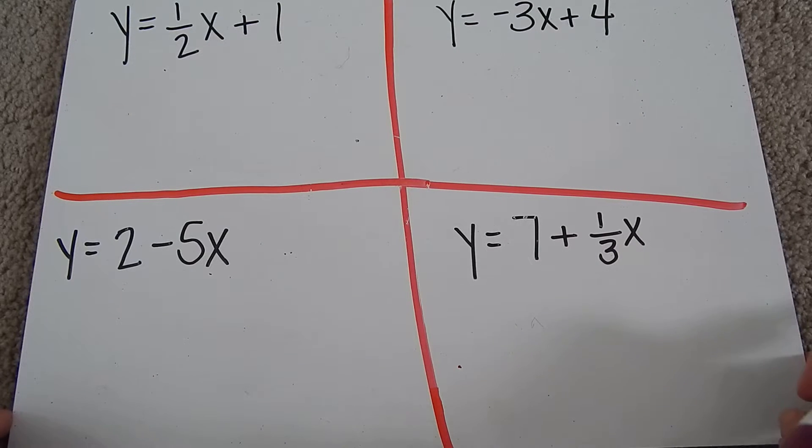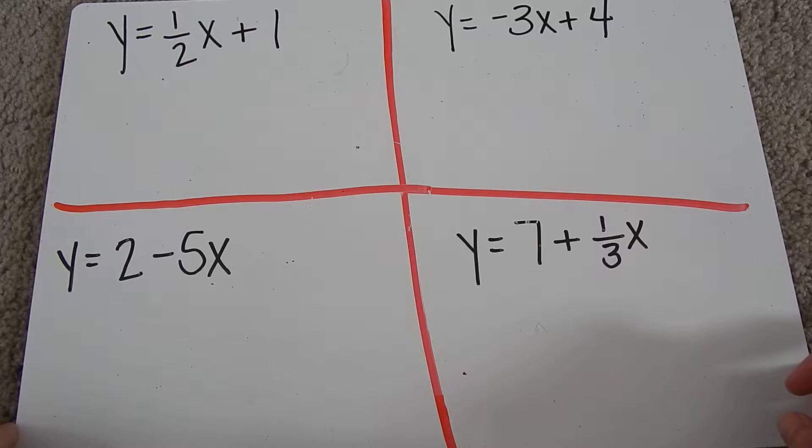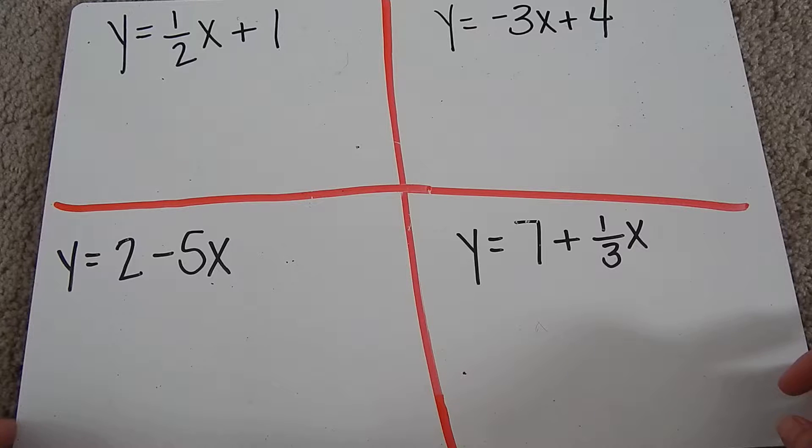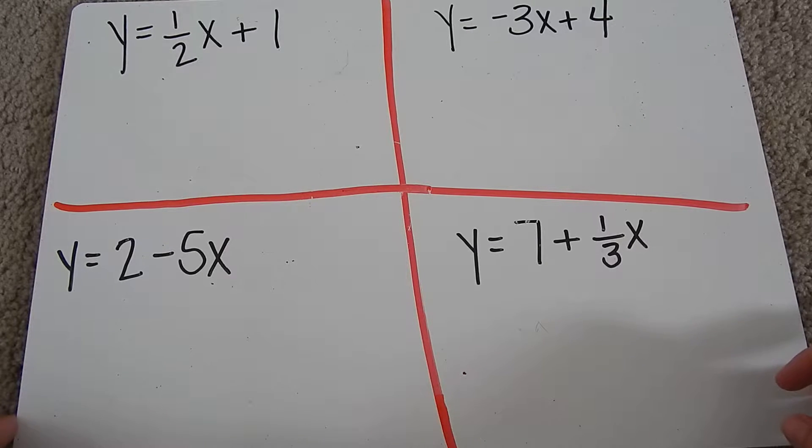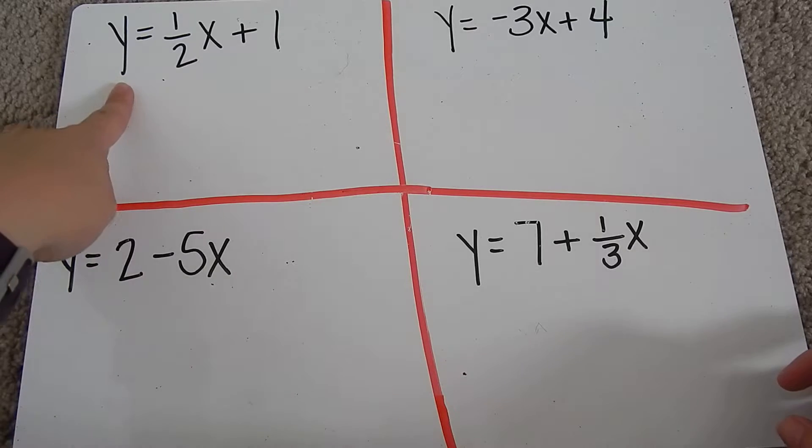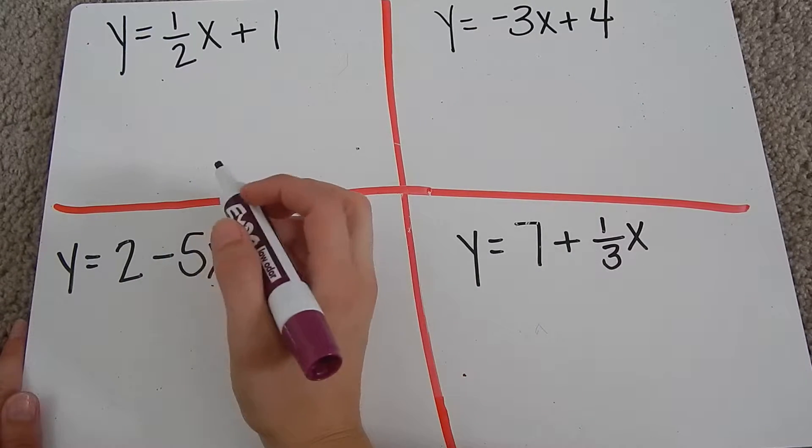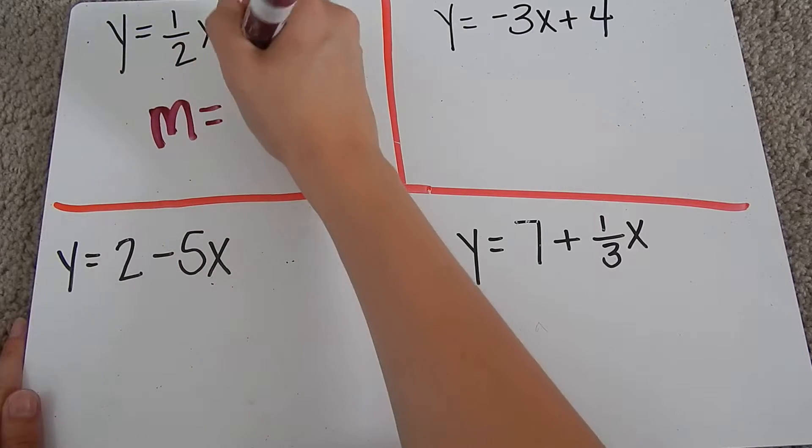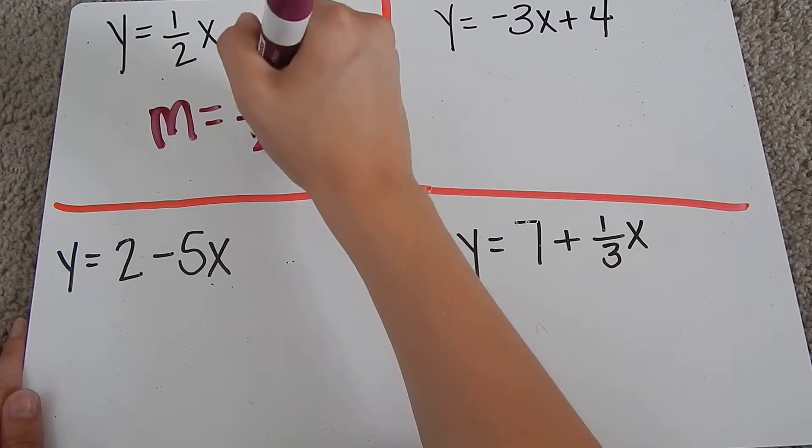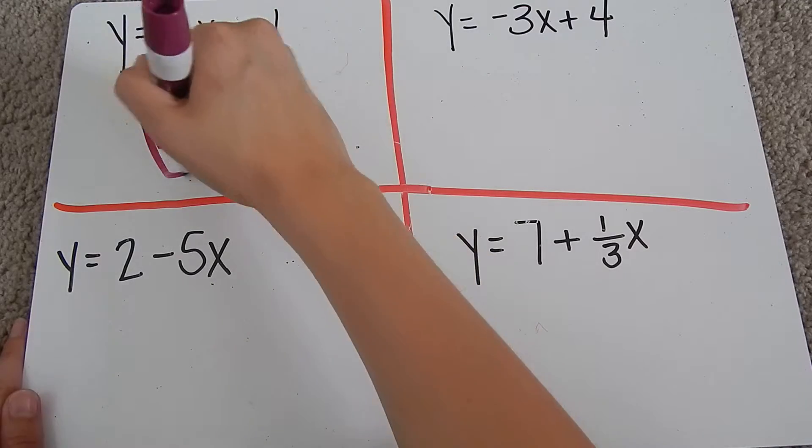So here are our first few examples. The first one is y equals one-half x plus one. It's in slope-intercept form because y is by itself, and we just look for the m, which is the number attached to the x. So here my slope is equal to one-half.